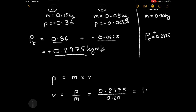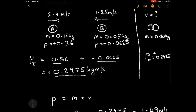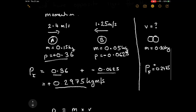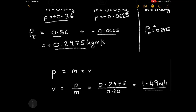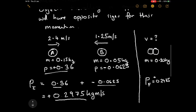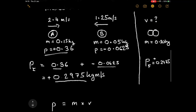Using p = mv, velocity equals momentum over mass: 0.2975 divided by 0.20 gives us 1.4875, which we round to 1.49 metres per second. This makes sense — object A is struck by a smaller object moving the other way, so it won't change direction but will slow down. That's how we deal with negative momentum in collisions.